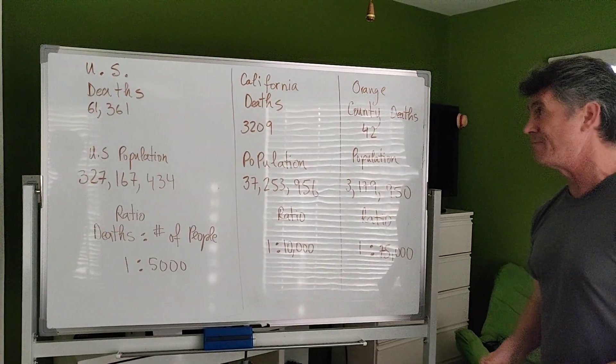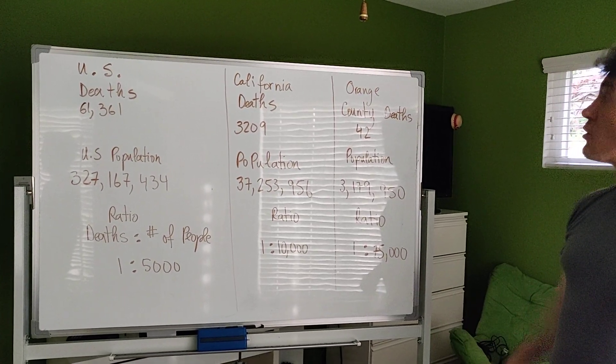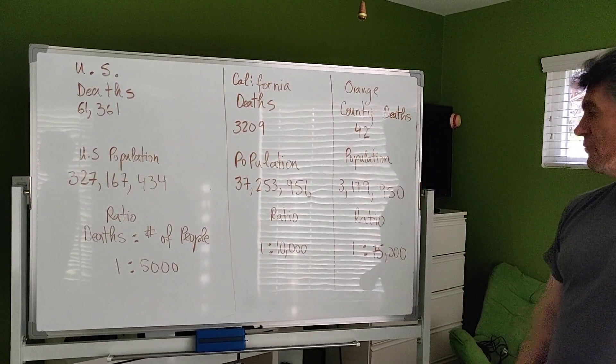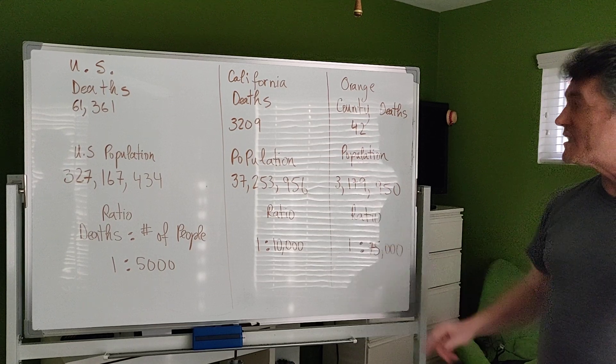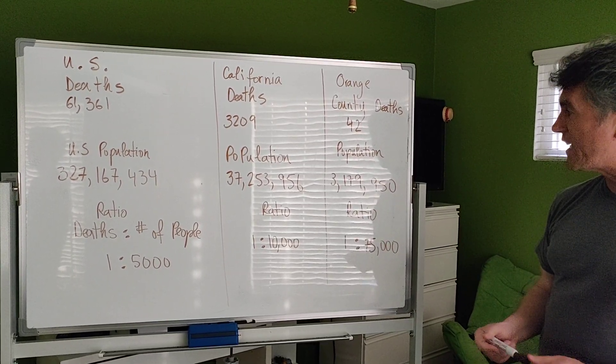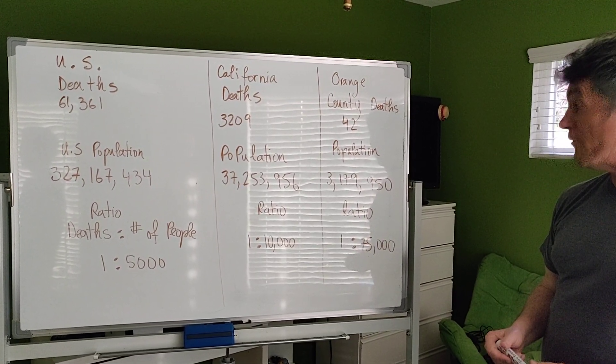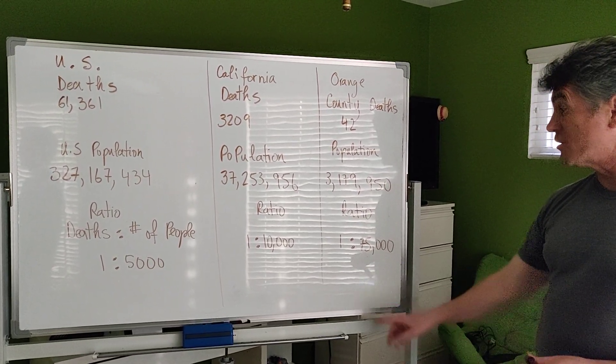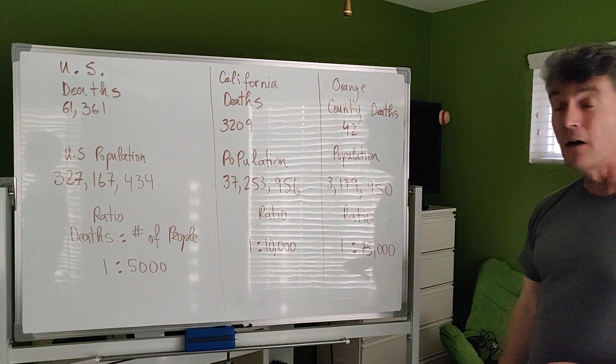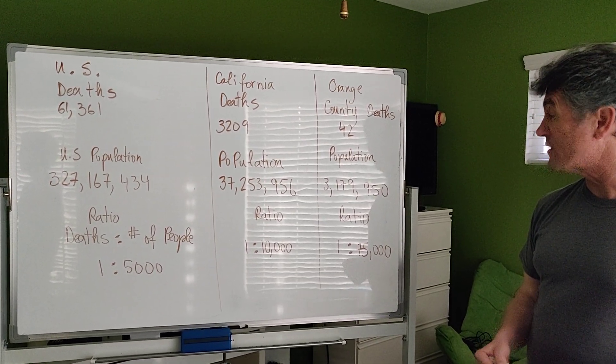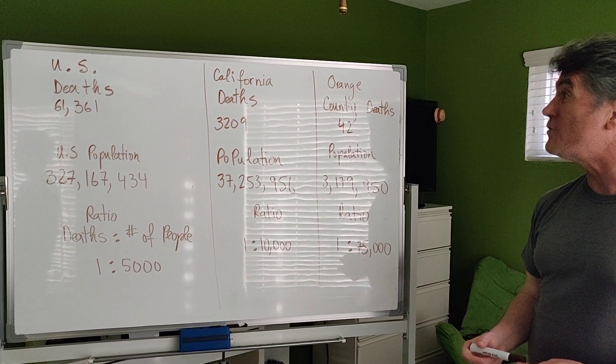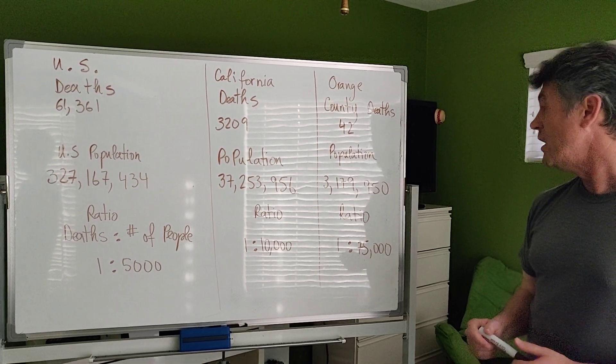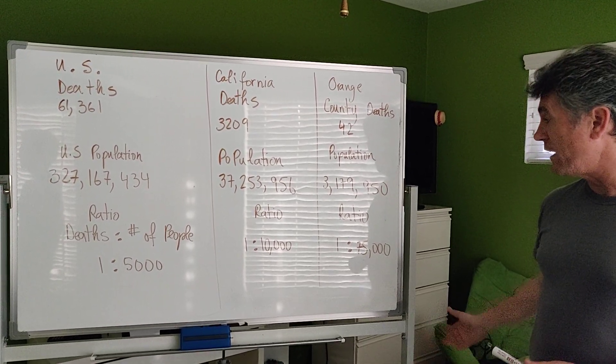Let's take a look at Orange County. In Orange County, the total number of deaths is 42. The population is 3,179,950. The ratio of deaths to people in the county is 1 to 75,000. So for every 75,000 people that live in Orange County, there is one death for COVID-19.